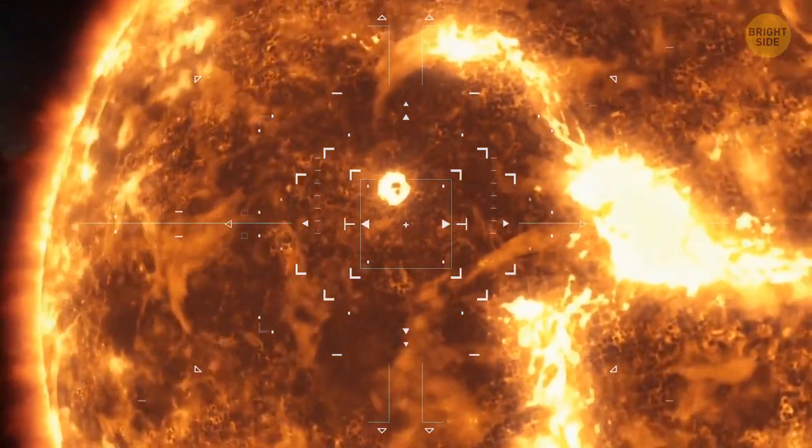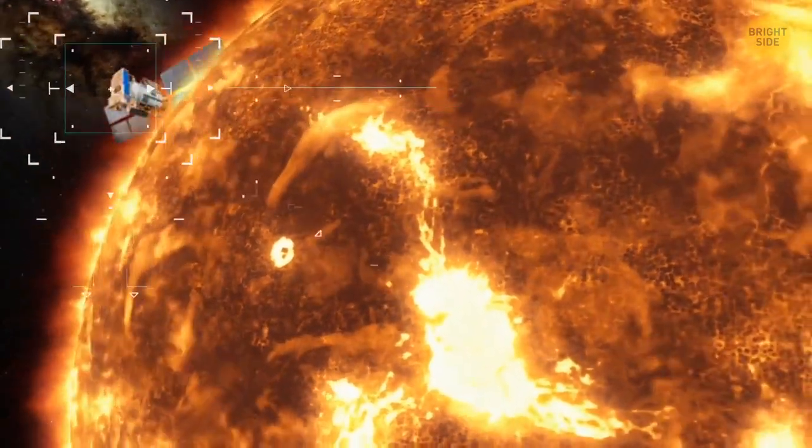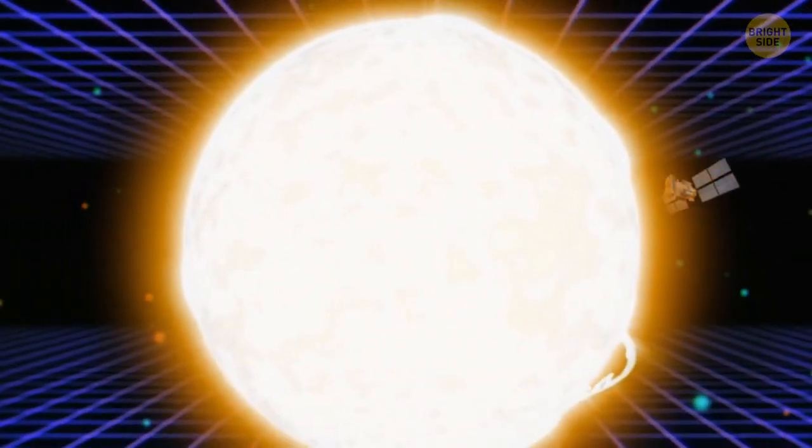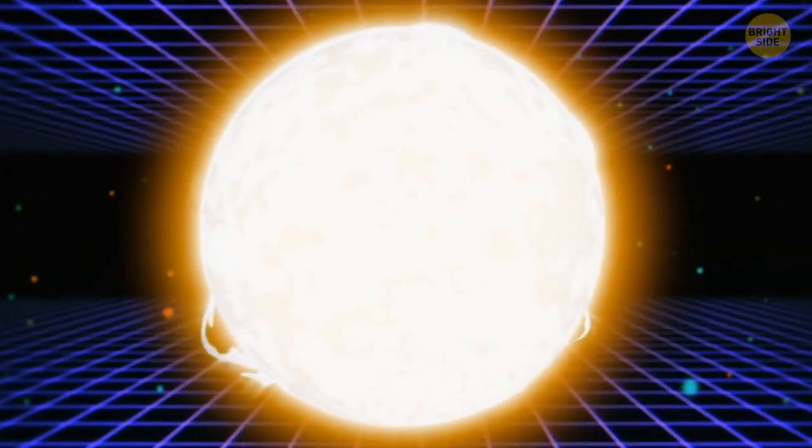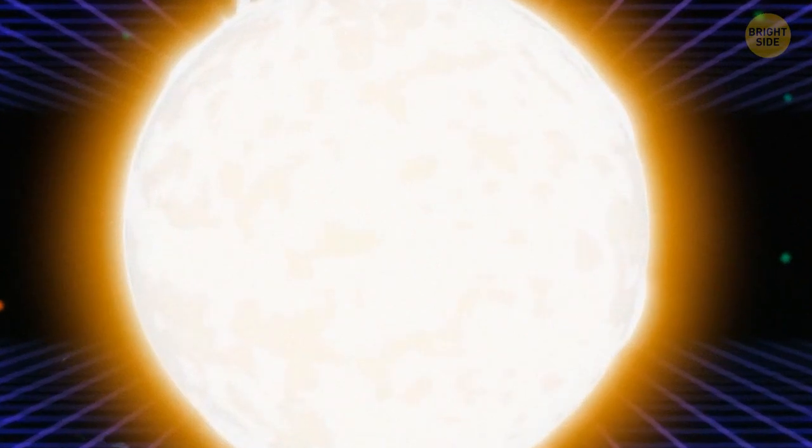Before touching its surface, the spacecraft had to enter the star's orbit first. To achieve this, it did even more gravitational maneuvers. Only after that did it start circling the sun, the heaviest object in the solar system with the most powerful gravity. So, it'll give the probe an incredible amount of acceleration with each flyby.